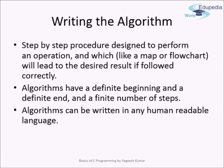Now we come to writing the algorithm. Having defined our problem, we move to step 2. A step-by-step procedure designed to perform an operation — which, like a map or flowchart, leads to the desired result if followed correctly — is known as an algorithm. It should have a definite beginning, a definite end, and consist of a finite number of steps.